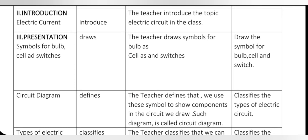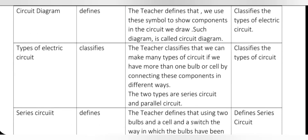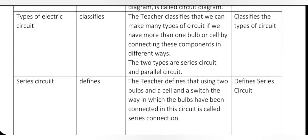In the presentation, symbols of a bulb, cell and switch are covered. The teacher draws the symbol for bulb, cell, and switch on the board. Evaluation: students are able to draw the symbol for bulb, cell, and switch. Then, defining circuit diagram — the teacher defines that we use symbols to show components in the circuit, and such diagrams are known as circuit diagrams. Students are able to define the circuit diagram.